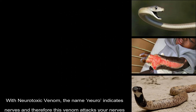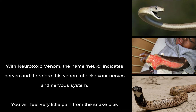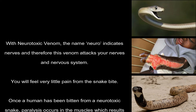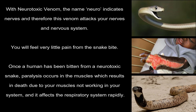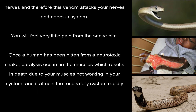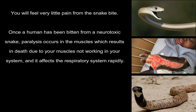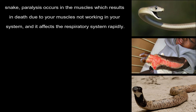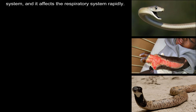With neurotoxic venom, the name 'neuro' indicates nerves, and therefore this venom attacks your nerves and nervous system. You will feel very little pain from the snake bite. Once a human has been bitten by a neurotoxic snake, paralysis occurs in the muscles, which results in death due to your muscles not working in your system, and it affects the respiratory system rapidly.